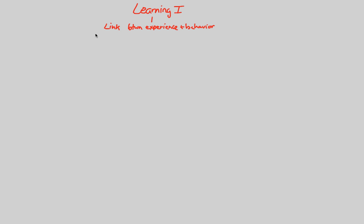Before we get into learning, we have to make sure we understand what is not learning. Something that is not learning is anything that is an innate behavior. Innate behavior cannot be considered learning because it is simply not the establishment of a link between experience and behavior — it is an instinct. Innate behaviors are instinctual; they happen on their own. There is no learning necessary. Innate behaviors are instinct.